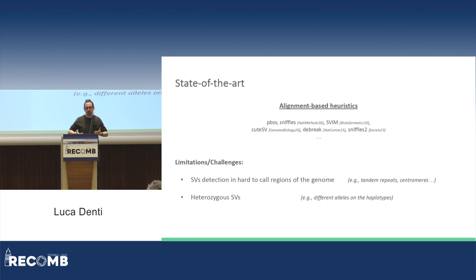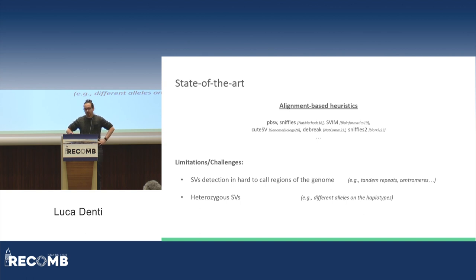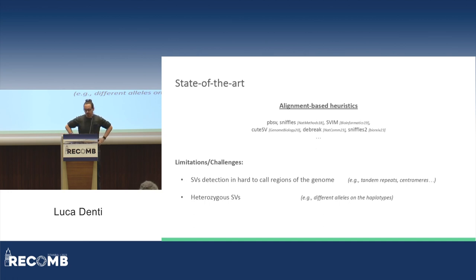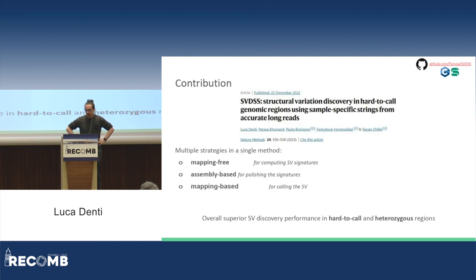Currently, if you want to discover structural variations from long reads, you have a lot of alignment-based heuristics like PBSV, SNFL, SNFL-2, and others. But all these approaches show the same limitations — challenges that we wanted to tackle. First, all these approaches show very low accuracy in hard-to-call regions of the genome, like tandem repeats and segmental duplications. Moreover, they also show limited support for heterozygous structural variations, meaning variations that show a different allele on both haplotypes — for instance, a 100-base pair insertion on one haplotype and a 300-base pair insertion on the other.